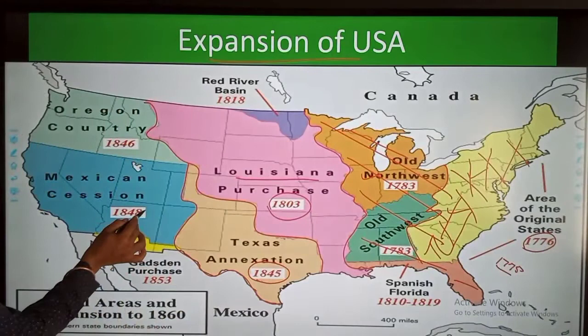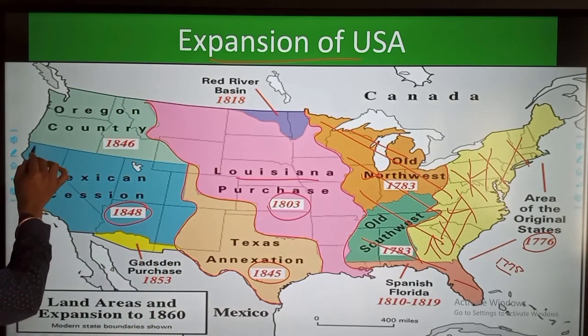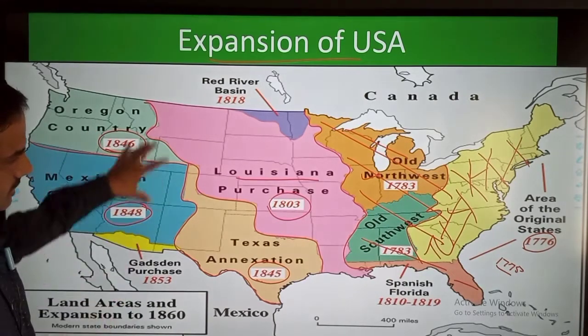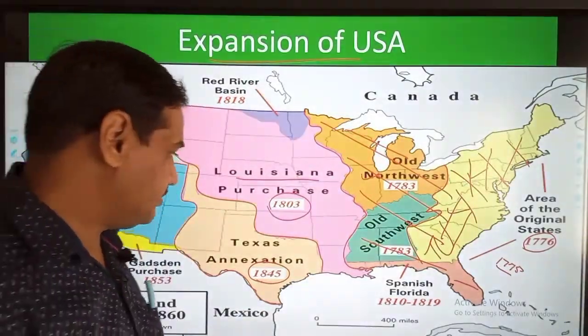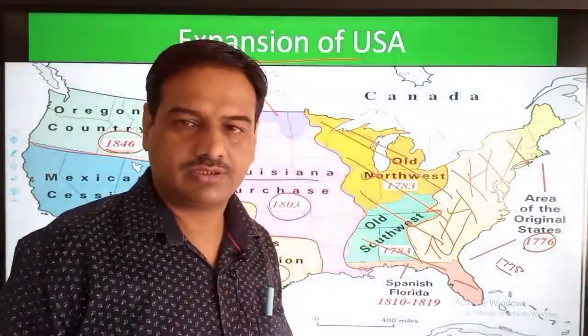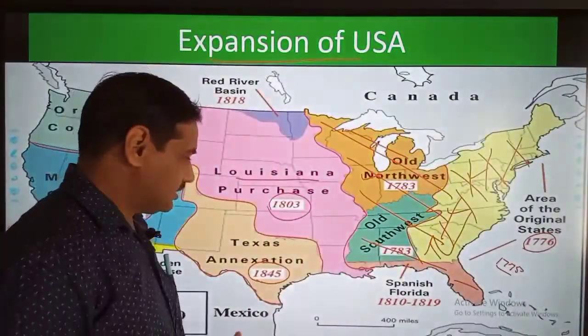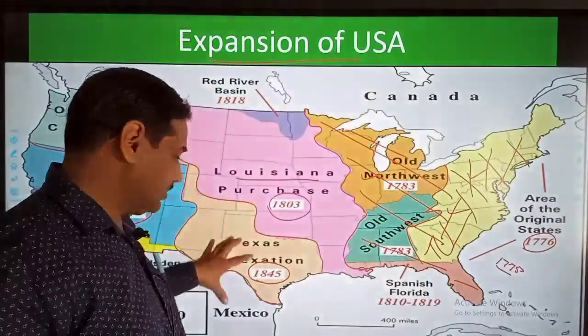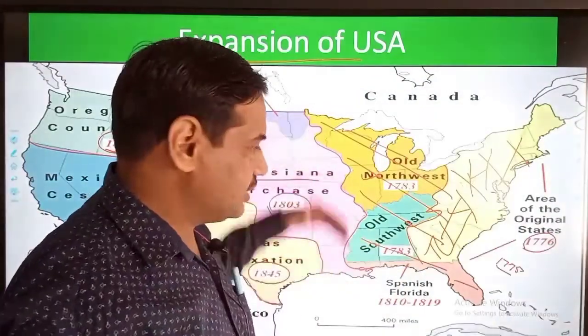In 1848, the Mexican region was also conquered and merged with the US. Then Oregon County was also merged with the US in 1846. So these were the areas merged with the US, making it quite large. At some places it waged a war; other areas were joined after purchasing. The US fought a war with the Spaniards and the southern part, which used to be part of Mexico, was conquered by the US Army.